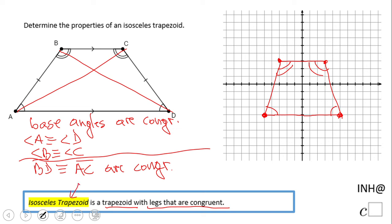These are the two main properties that an isosceles trapezoid has. But don't forget, it's still a trapezoid.